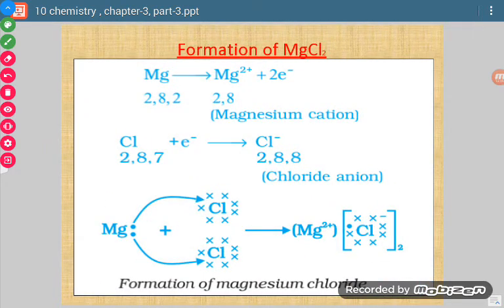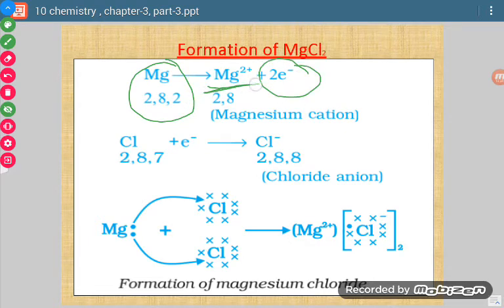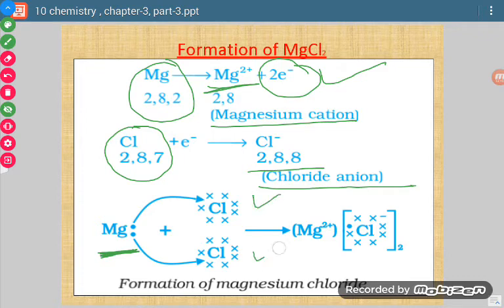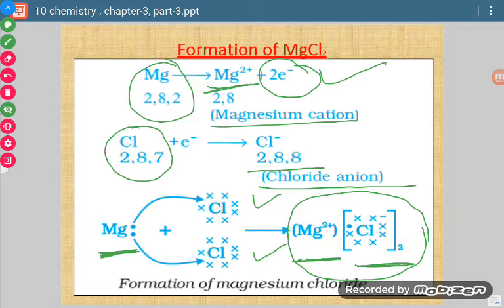For the formation of magnesium chloride: magnesium has electronic configuration 2, 8, 2. When it loses two electrons, it achieves noble gas configuration and forms Mg²⁺. There are two chlorine atoms, each gaining one electron, so two Cl⁻ ions are formed. In Lewis representation, Mg gives its two electrons to two Cl atoms, forming Mg²⁺ and two Cl⁻ ions which attract each other, giving magnesium chloride.